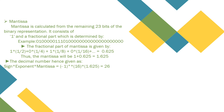The mantissa is calculated from the remaining 23 bits of the binary representation. It consists of 1 and a fractional part. In the given example, 0 is the sign bit and the next 8 bits are the exponent bits. The fractional part of the mantissa is given by 1×(1/2) + 0×(1/4) + 1×(1/8) + 0×(1/16) and so on, which equals 0.625. Thus the mantissa is 1 + 0.625 = 1.625, and the decimal number given as sign × exponent × mantissa equals 26.